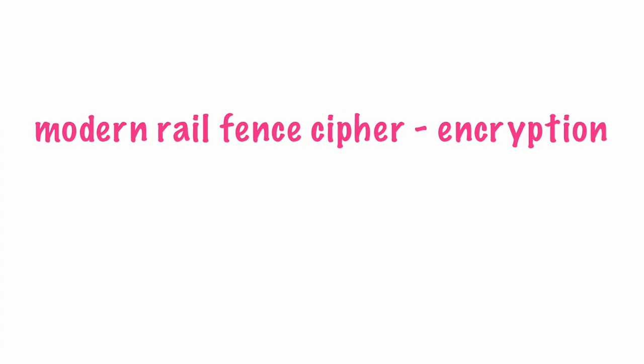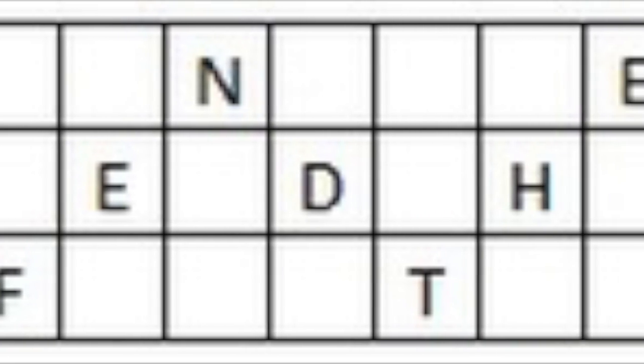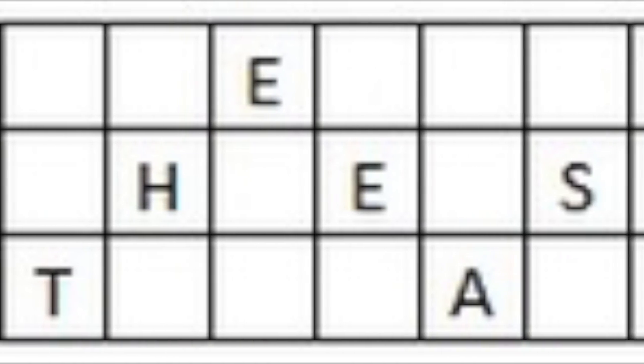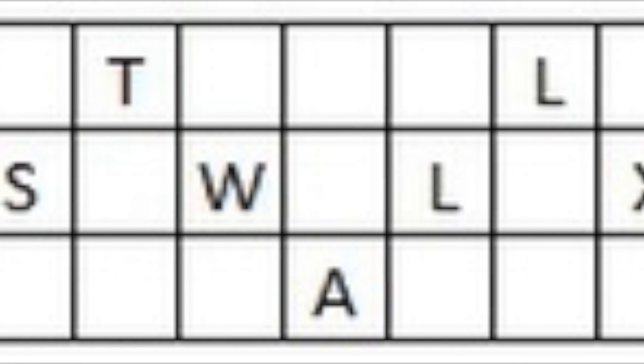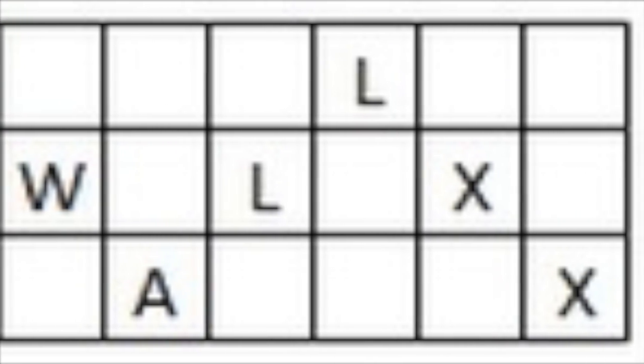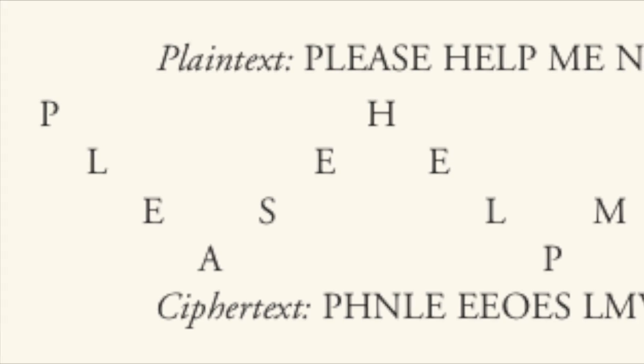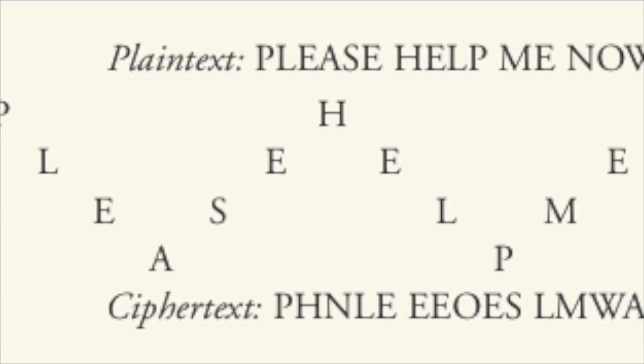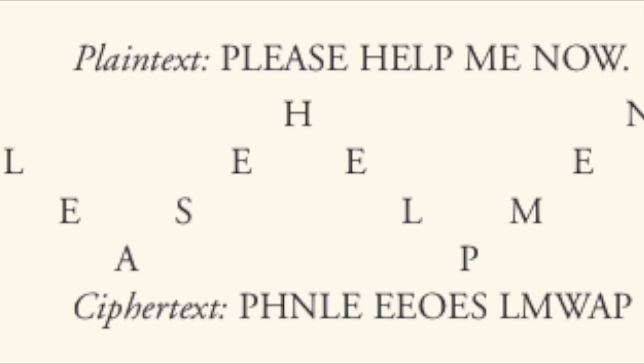Today, the rail fence cipher has been developed even further. It now works by writing the message on alternate lines, in a zigzag pattern across the page, with the spaces removed. The encrypted message is then obtained by reading off the letters row by row, from the top to the bottom.